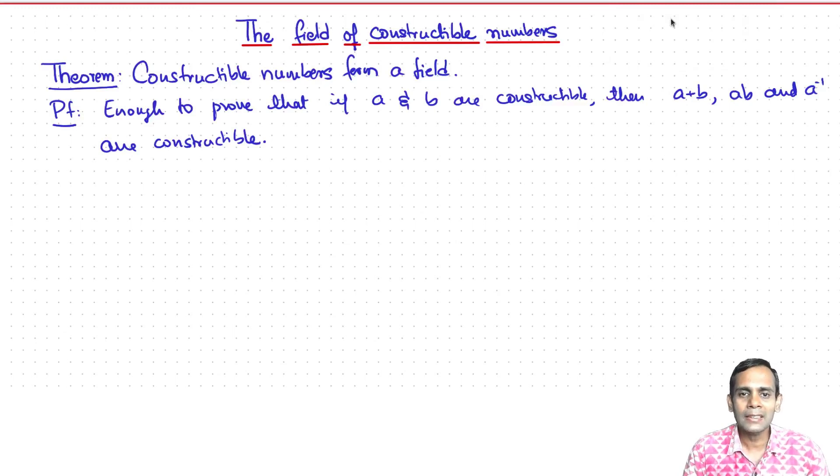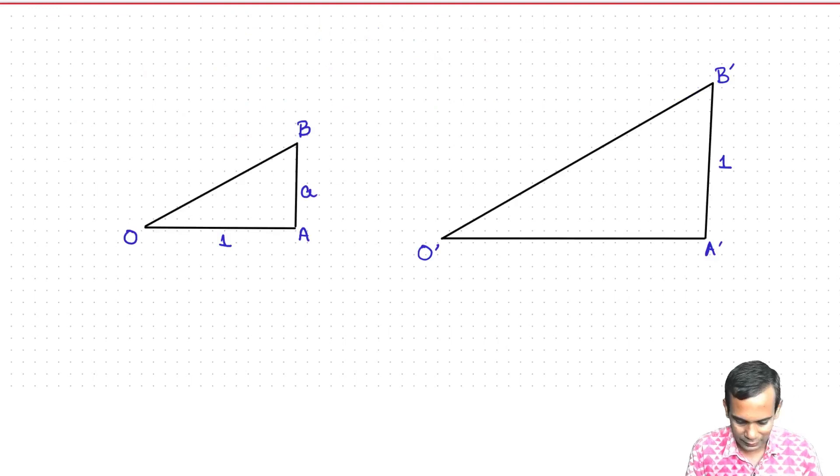So the idea here is very similar to the construction of AB. It's a slight variant, again using similar right triangles. And I'll just show you the general idea and leave you to fill in the details. So the point is, you start off with a triangle O, A, B where the vertical edge is of length A. And then you construct a triangle that is similar to it. Let's call it O prime A prime B prime where the vertical edge is of length 1.